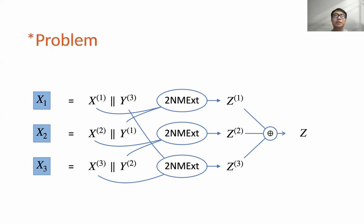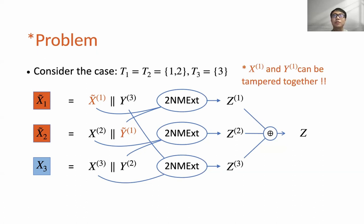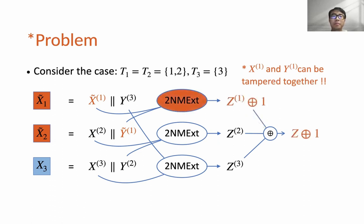However, there is a problem with this construction. Consider the case where input sources X1 and X2 are tampered together and X3 is tampered independently — this is a joint tampering. Since the first two input sources are tampered together, X^1 and Y_1 can be tampered together. This is a fatal problem since the adversary now has full control of the output of the first two-source non-malleable extractor. For example, it can tamper X^1 and Y_1 together so that the tampered output Z1-tilde always equals 1, and then the final tampered output Z-tilde also always equals 1. Therefore, the security is totally broken.